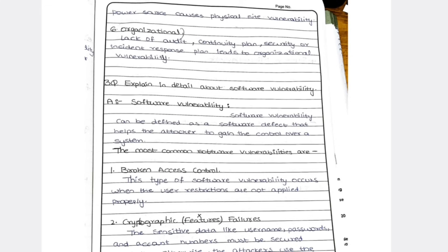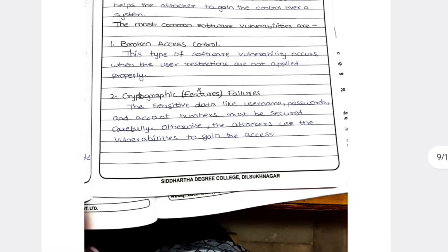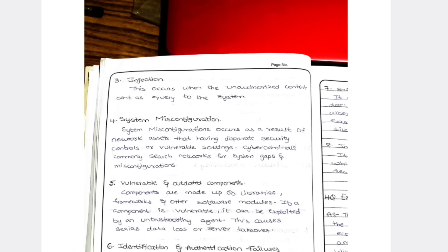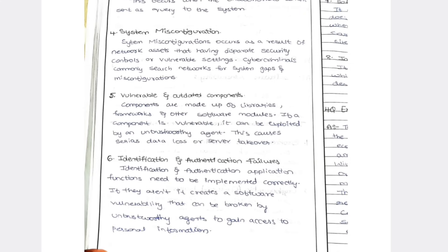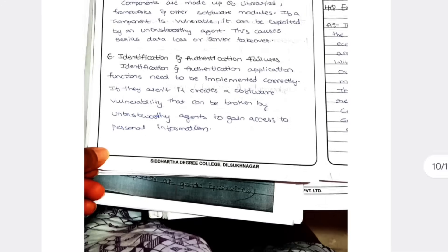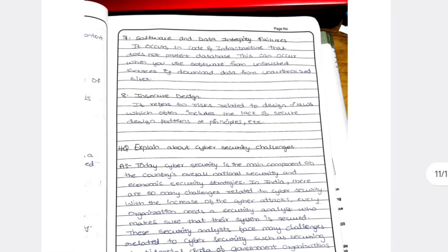The third question is specifically about software vulnerability. Types include: broken access, cryptographic failures, injection, system misconfiguration, outdated components — if your WhatsApp is not updated, you're using old security. Companies update every two to three months to secure customer data. Sixth is identification and authorization failures — username, password, face recognition, fingerprint. Other types include software and data integrity failures, and insecure design.